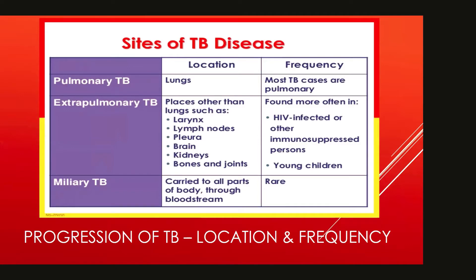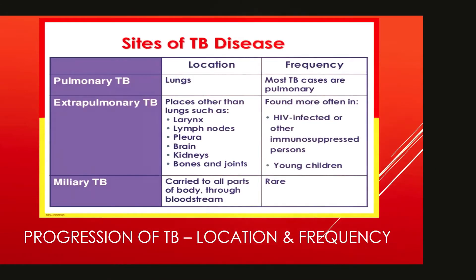Moving into active TB disease, deepening disorders in the immune system cause complications, which are facilitated by late diagnosis of primary TB. In primary TB, calcified lesions show on X-rays in the lungs, but TB can also spread extrapulmonary to the larynx, lymph nodes, pleura, brain, kidneys, bones, and joints, and in rare cases to all parts of the body through the bloodstream.